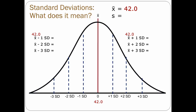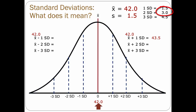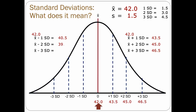Let's see what happens with the same mean but a smaller standard deviation, such as 1.5. The mean is still in the center. Adding one standard deviation: 42 + 1.5 = 43.5. Two standard deviations: 42 + 3 = 45. Three standard deviations: 42 + 4.5 = 46.5. We can plot these at plus 1, plus 2, and plus 3 standard deviations, and do the same for the negatives. You can see that the scores are much closer together — there is less variation.